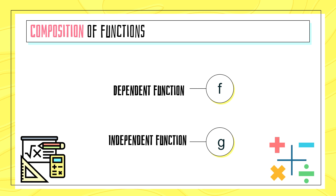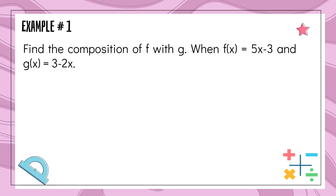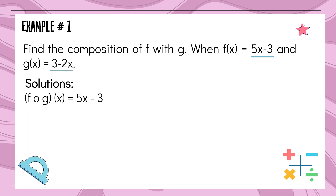Let's have example number 1. Find the composition of f with g when f of x is equal to 5x minus 3, and g of x is equal to 3 minus 2x. The given of f is 5x minus 3, and for g is 3 minus 2x. The first function is f, so we copy the given of f which is 5x minus 3. So the composition of f with g is equal to 5x minus 3.